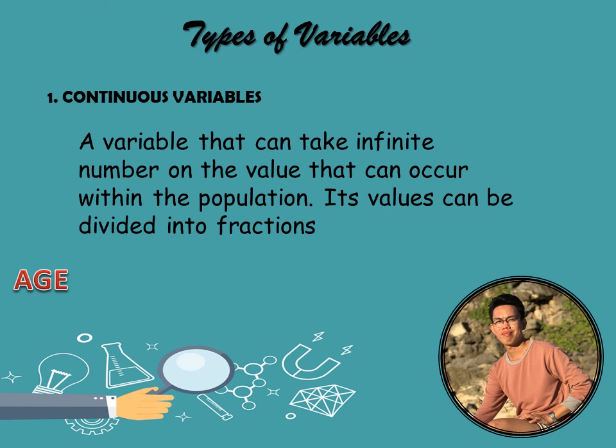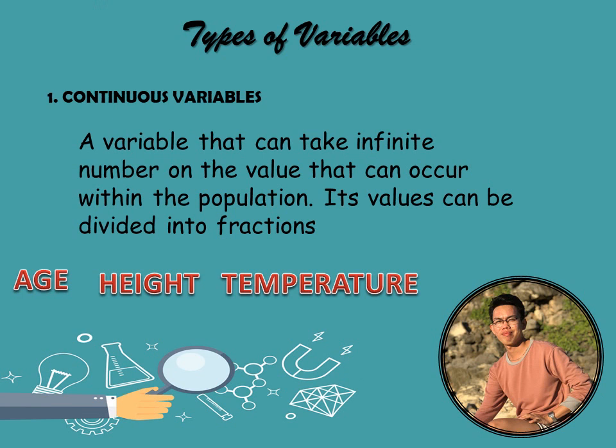For age, you can say you are 19 and a half years old. Another example is height, which can be broken down into decimals because we have centimeters, meters, and feet. Temperature is also an example — for instance, 72.2 degrees Celsius or zero degrees Celsius. Those are measured in decimals or fractions.